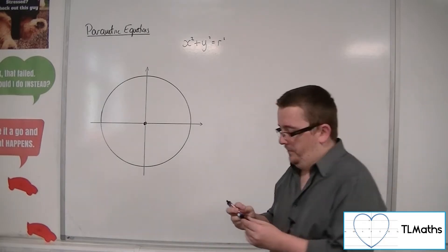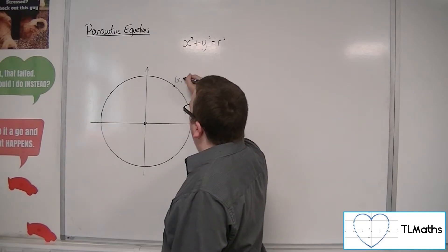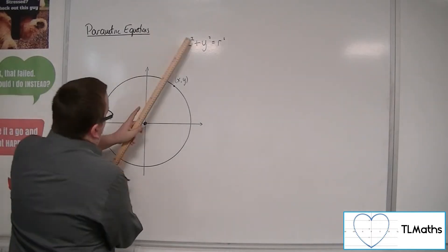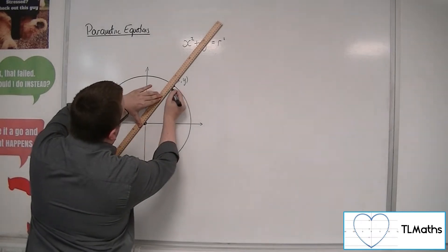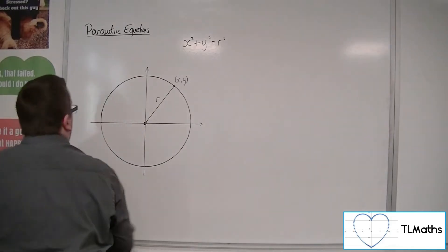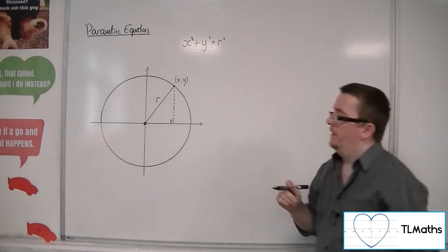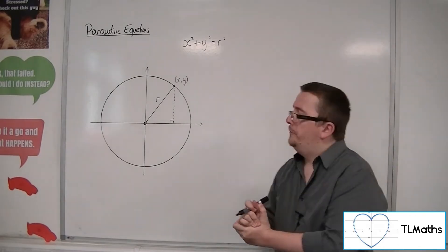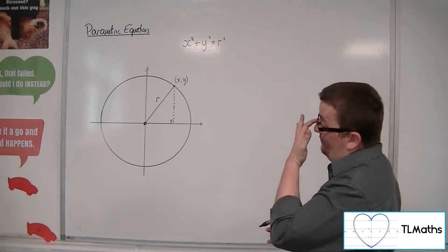In our diagram here, let's say I've got a single point on the circle, and it will have coordinates x, y, for some x and y. Now, if I draw a radius of length r, and if I drop a perpendicular forming a right-angled triangle, then what I can start to do is think about how I can define x and y parametrically.